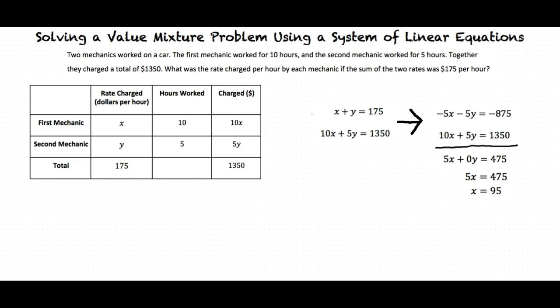This means that the first mechanic charged $95 an hour. Okay. Well, now we know what x is, and that tells us the rate charged by the first mechanic. But we still don't know the rate charged by the second mechanic. We can determine the rate charged by the second mechanic by finding what y equals.